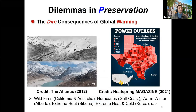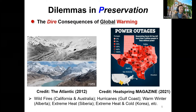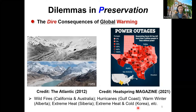Global warming has dire consequences, including the disappearance of glaciers worldwide and enormous amounts of extreme weather events. One extreme weather event occurred in February in Texas, completely knocking out the power grid. Other events include wildfires in California and Australia, hurricanes on the Gulf Coast, warm weather in Alberta, extreme heat in Siberia, and extreme heat and cold in South Korea — such extreme weather is occurring all over the globe.